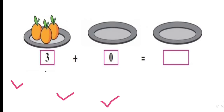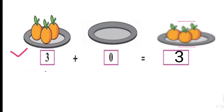See question number two. How many oranges are there in the plate? There are three oranges. When we add zero, it is equal to three oranges.